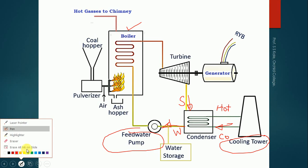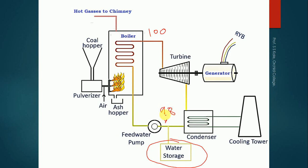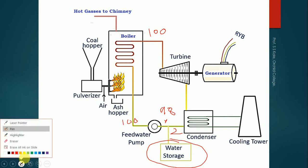Sometimes the steam generated can leak, reducing the amount of steam available. For example, if we supply 100 kg of steam, only about 98 kg may remain due to leakage in the turbine and pipelines. To prevent this loss from accumulating over cycles, we supply makeup water — in this case 2 kg — from an external water source, maintaining a constant 100 kg of water for each cycle.